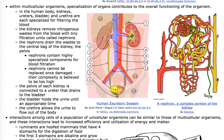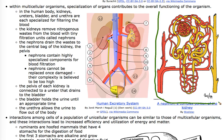Nephrons are so complicated that they basically cannot be replaced. If you lose your nephrons due to trauma or infection, you end up on dialysis — artificial blood filtration — for the rest of your life. The pelvis of each kidney drains collecting ducts from the nephrons, your bladder holds urine until it's appropriate to urinate, and the urethra allows urine to flow out of the body.